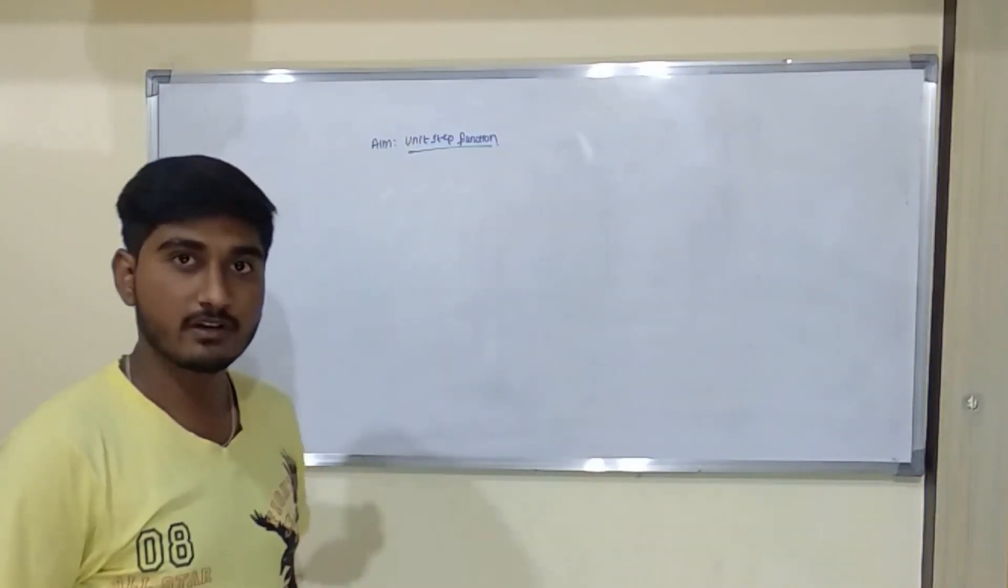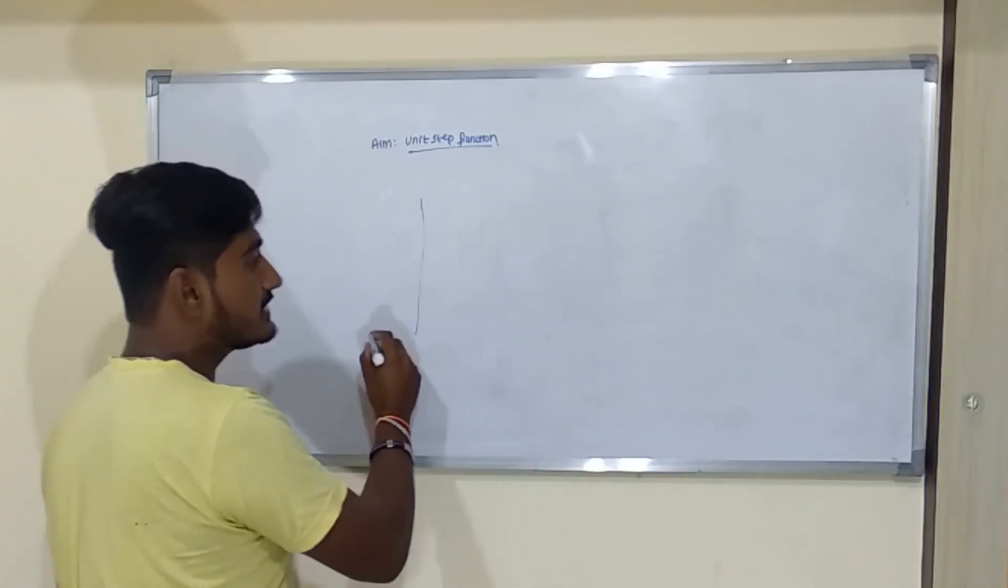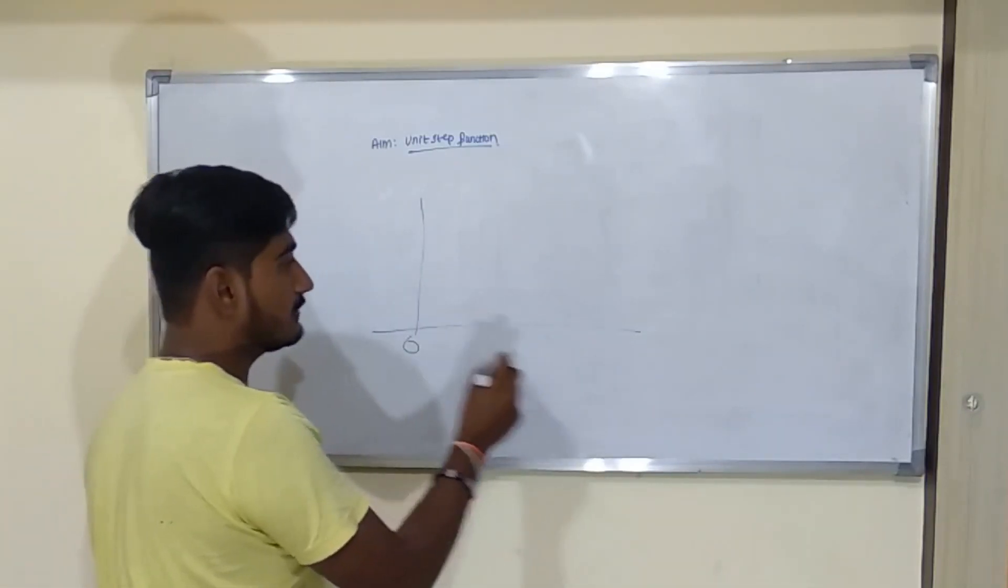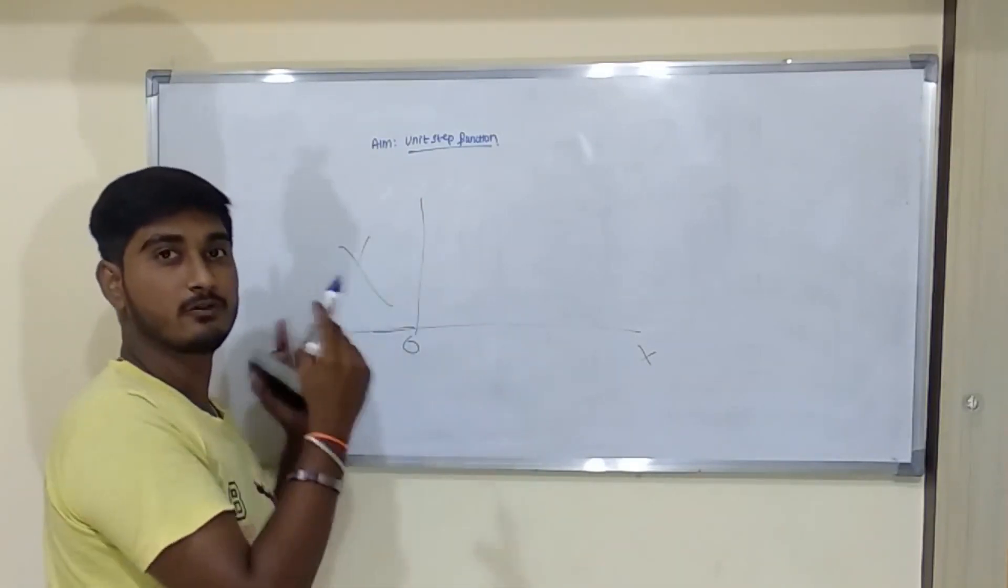So guys, what is a unit step function? Unit step function is a type of function in which it is defined only for positive x-axis, which means there will be no negative values for unit step function.